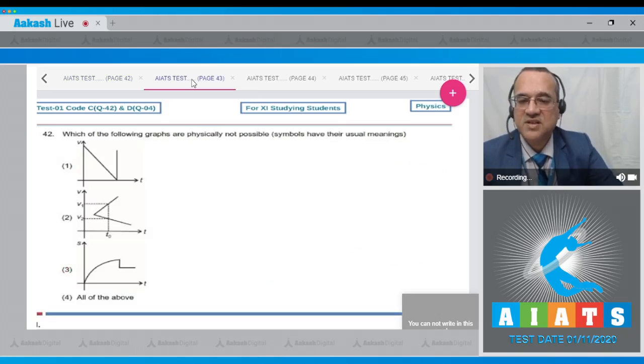Let us move to the next problem. Which of the following graphs are physically not possible? Symbols have their usual meanings. The first graph is between velocity and time, second is between velocity and time, third is between position and time, or all of above. Now, look at the first graph.